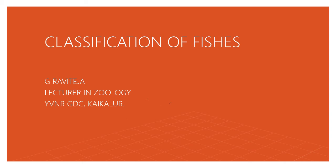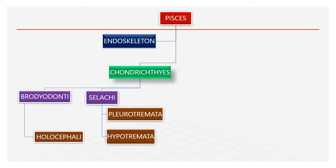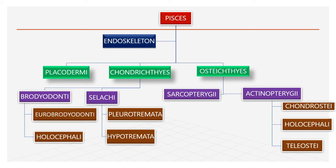Good afternoon students, today we will discuss about the classification of fishes. Pisces, depending upon the character of endoskeleton, is divided into three classes. The first class is Placodermi, which are extinct, and the extant classes are Chondrichthyes and Osteichthyes.